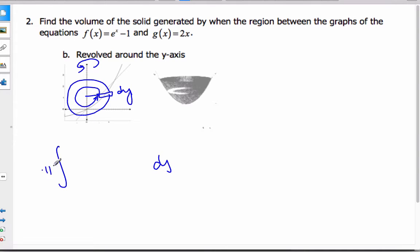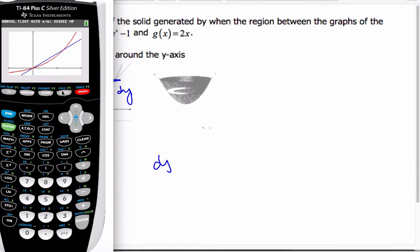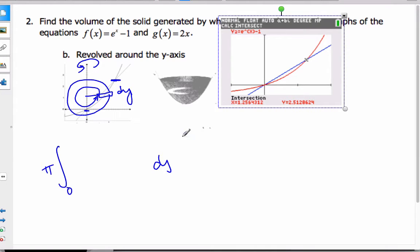And so again, it's pi. My intersection is 0 here. But up here, this value needs to be a y value. So if I go back to my calculator and find the intersection again, I get the value 2.512. So up top here, it's 2.512.